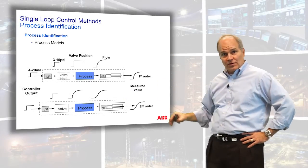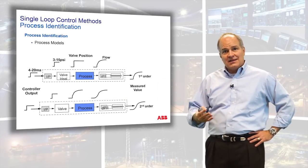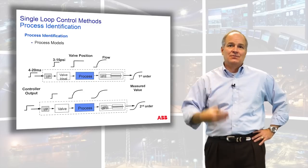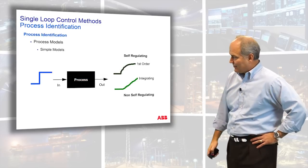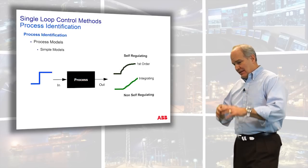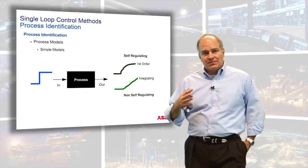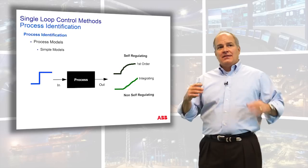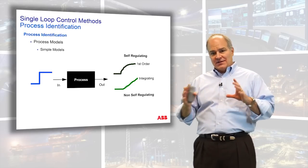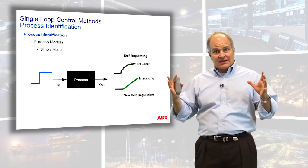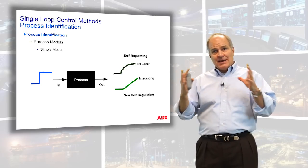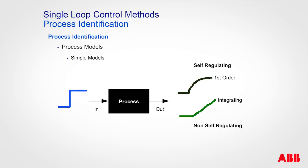In the world of control and process, there are two dominant classifications. I showed you six, but those six can be mapped into two: self-regulating and non-self-regulating.